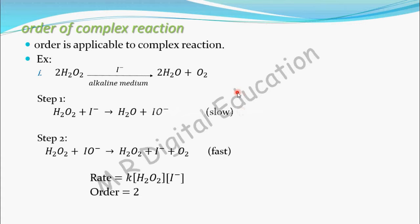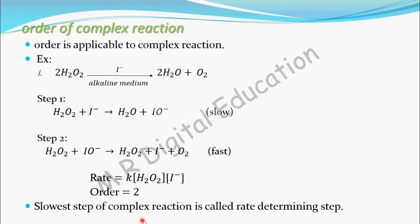The slowest step of the complex reaction is called the rate-determining step, because the rate is applicable to the slowest step of the complex reaction, and from that rate law you can find the order of the reaction. But why is the rate applicable to the slowest step? Let's take an analogy.